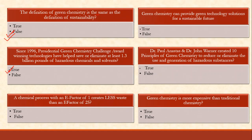A chemical process with an E-factor of 1 creates less waste than an E-factor of 25. The E-factor equals total mass of waste divided by total mass of product. When the E-factor is 1 versus 25, the higher number means more total waste is produced. So yes, a chemical process with an E-factor of 1 creates less waste — that is true.